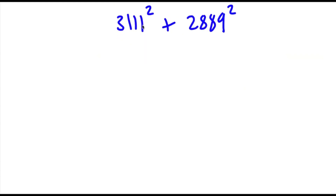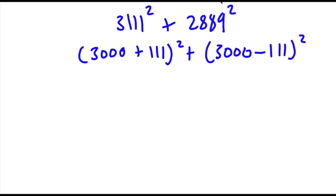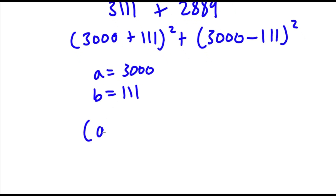Alright, so I have 3,111 squared plus 2,889 squared. Now the first thing I'm going to do is rewrite this as (3,000 plus 111) squared plus (3,000 minus 111) squared. Now I'm going to set a equal to 3,000 and b equal to 111. So now if I substitute these in I get (a plus b) squared plus (a minus b) squared.